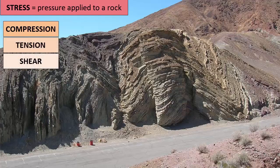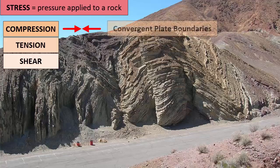When rocks are compressed, they are squeezed. Compression happens at convergent plate boundaries, where plates are pushed toward each other and the crust and plates get thicker.